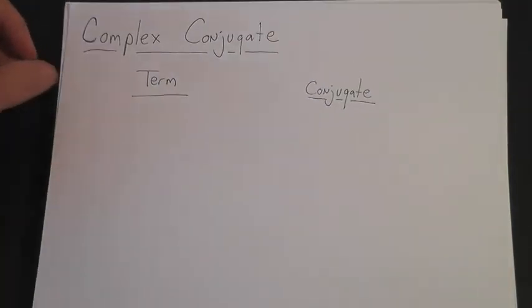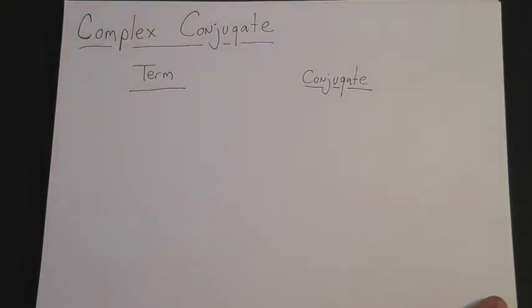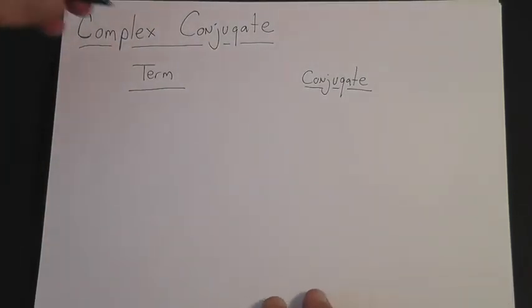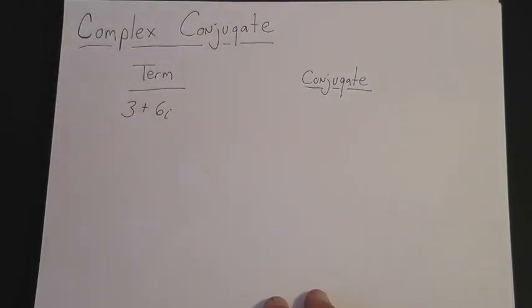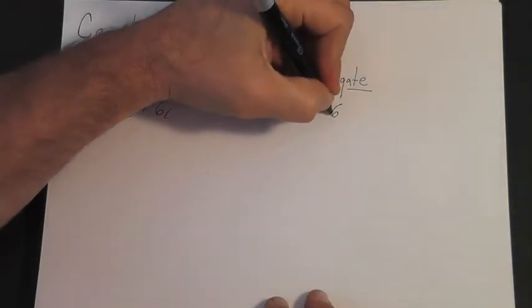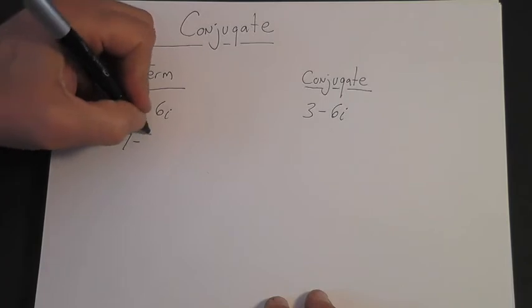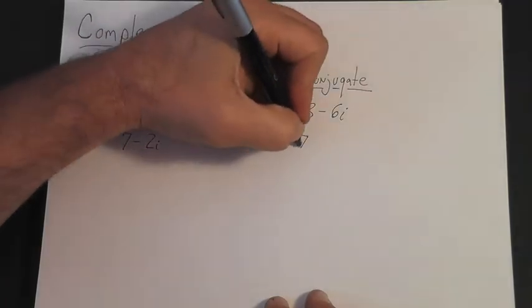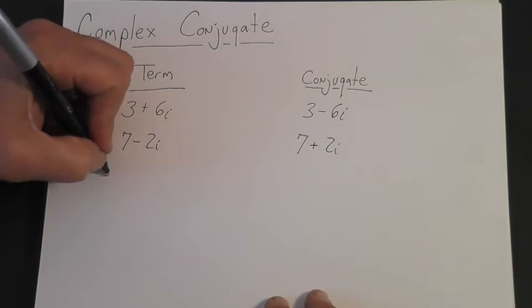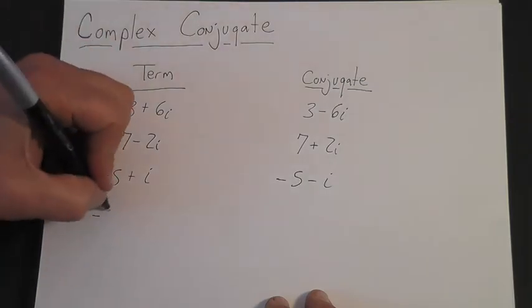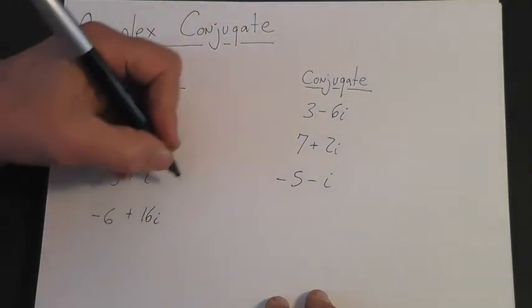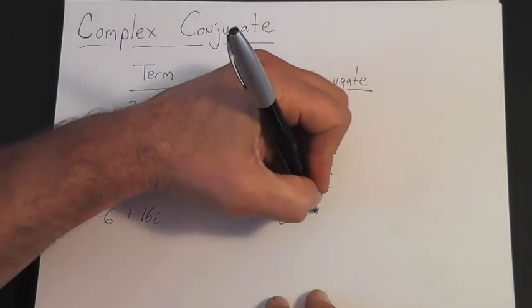Before we solve a problem like that, we need to study the complex conjugate. The complex conjugate is very similar to the radical conjugate. Rather than explaining it abstractly, let's just show you. If you have 3 plus 6i, the conjugate is 3 minus 6i. If you had 7 minus 2i, it's going to be 7 plus 2i. If it's minus 5 plus i, it's going to be minus 5 minus i. If it's minus 6 plus 16i, it's minus 6 minus 16i.